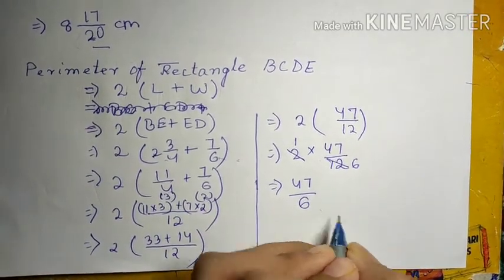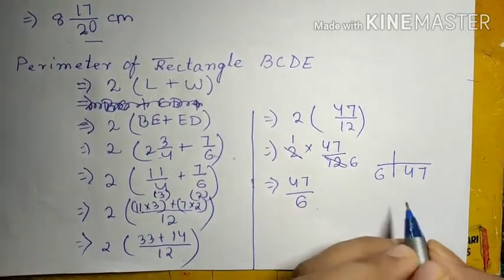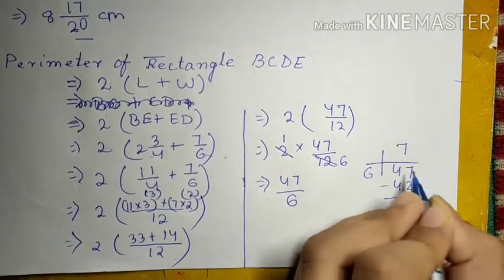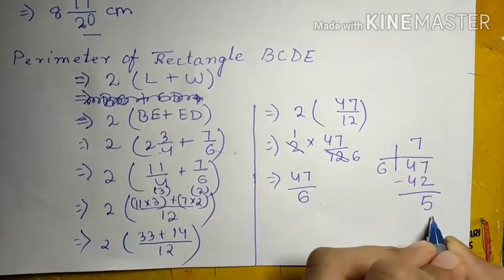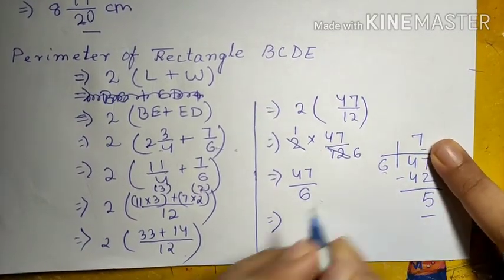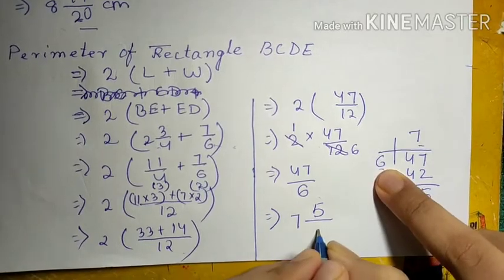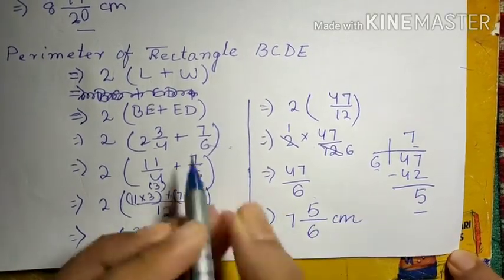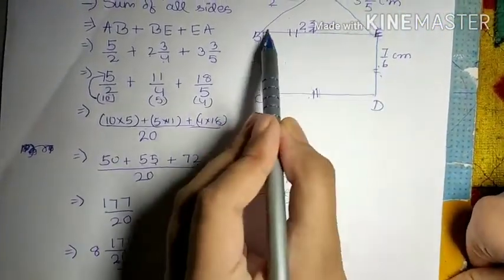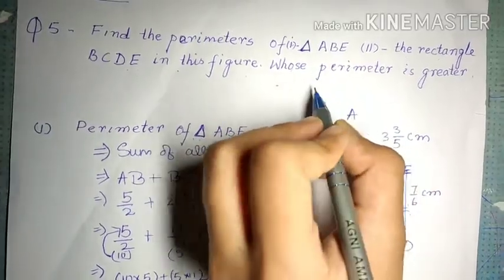Now we convert 47/6 into a mixed fraction. Dividing 47 by 6: 6 × 7 = 42, and the remainder is 5. So the quotient is 7, remainder is 5, and divisor is 6. The answer is 7 and 5/6. Since the sides are in centimeters, the perimeter of rectangle BCDE is 7⅚ centimeters.